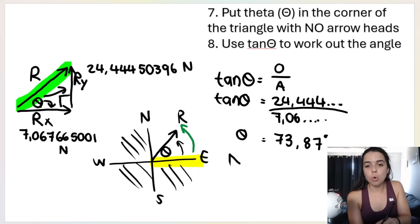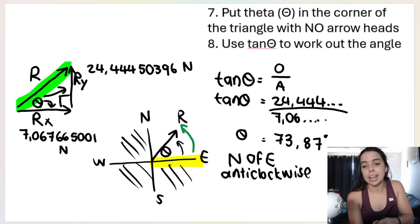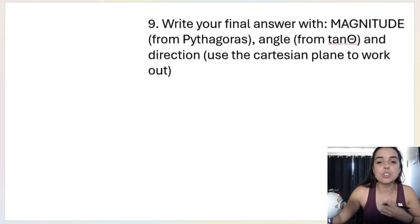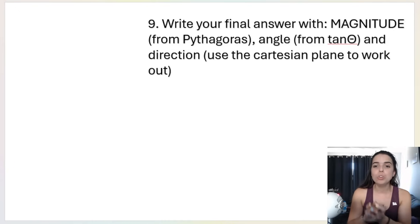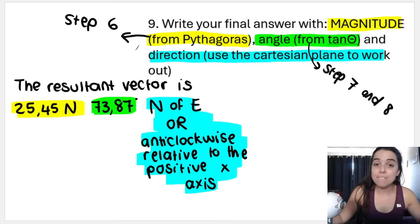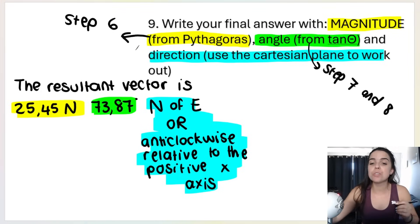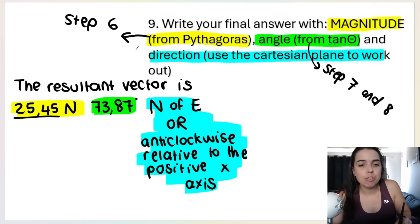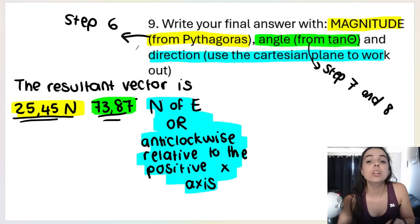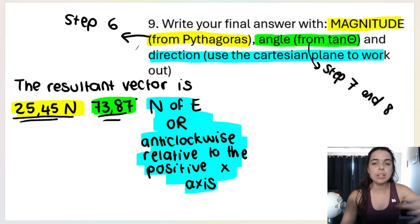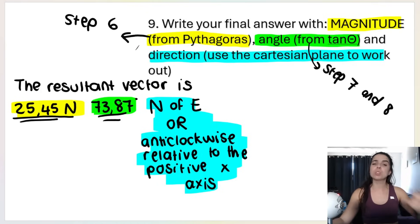So the direction is either 73.87 degrees north of east, or 73.87 degrees anti-clockwise relative to the positive x-axis. Step nine is to write your full, complete answer with your magnitude from Pythagoras, your angle from tan theta, and your direction from the Cartesian plane. All pieces of the answer must be there for you to get your marks: magnitude using Pythagoras (step six), angle using tan theta (steps seven and eight), and the actual direction using either compass points or the positive x-axis as reference.